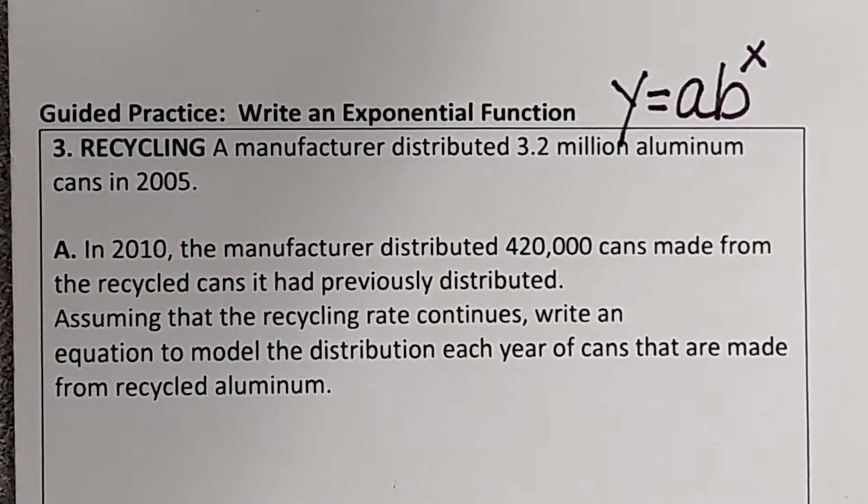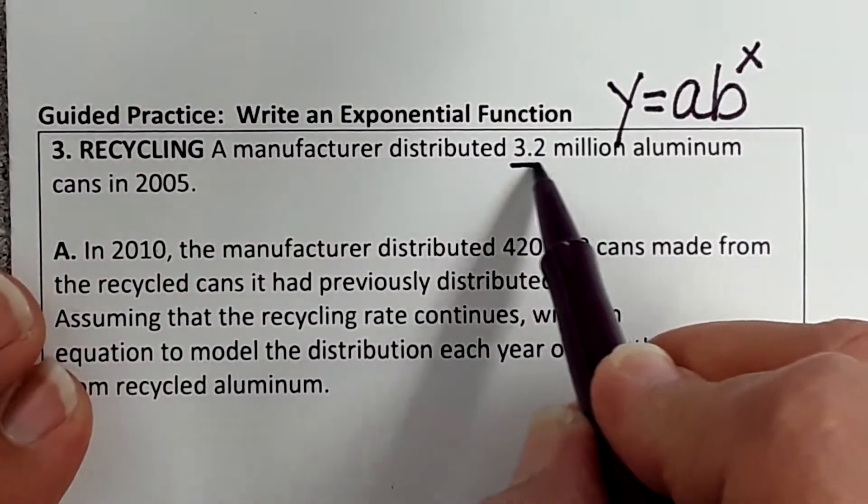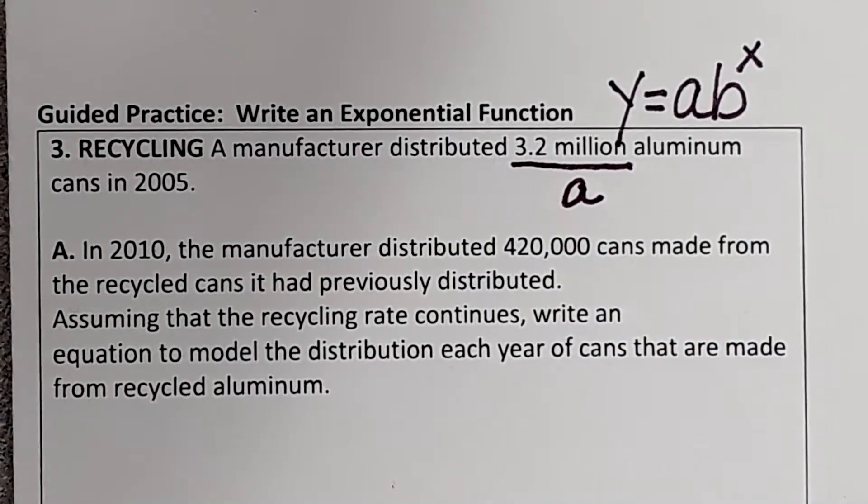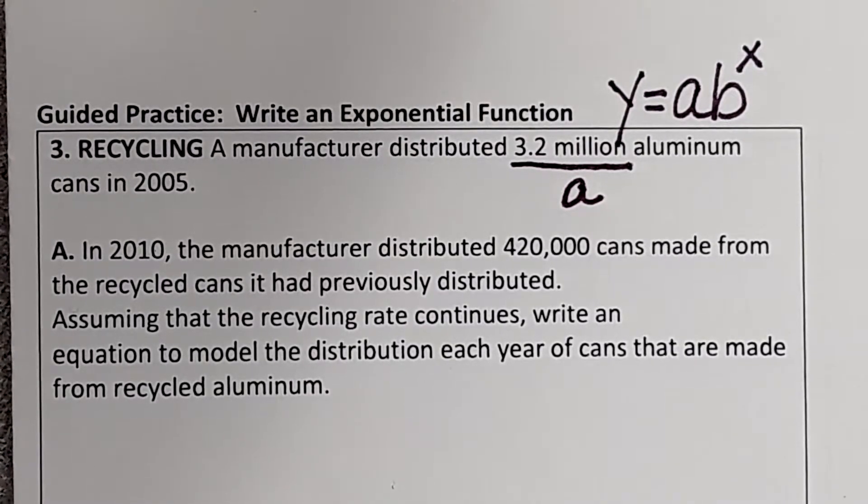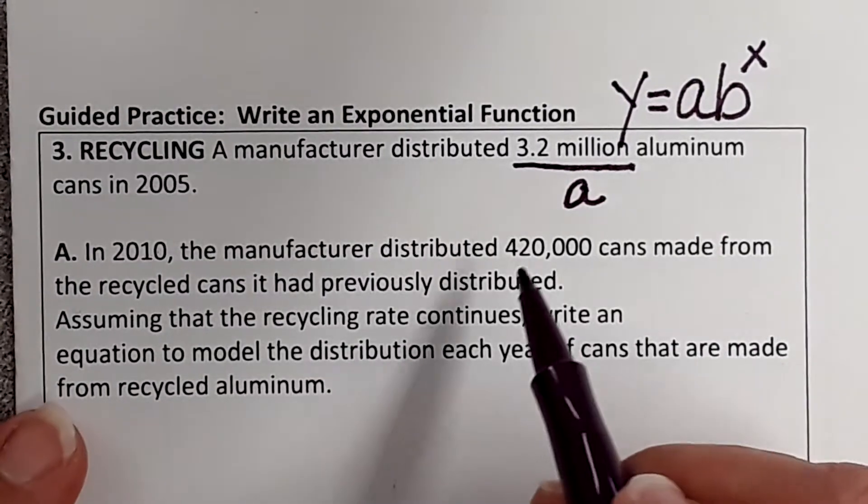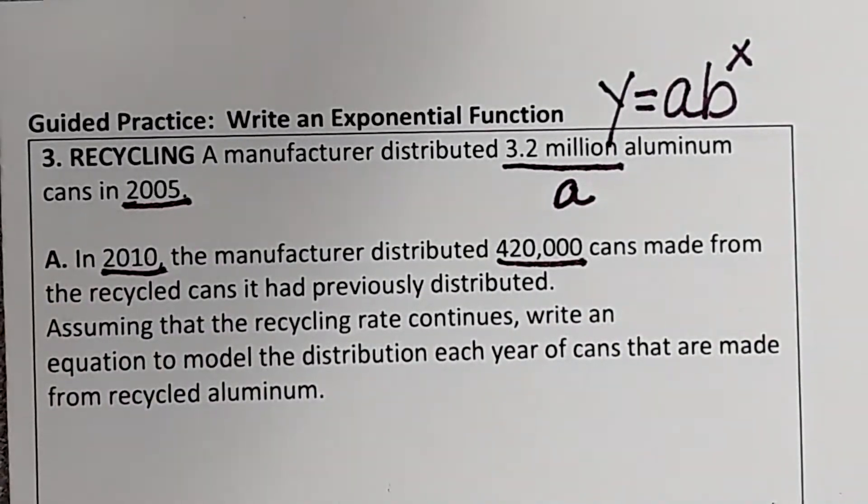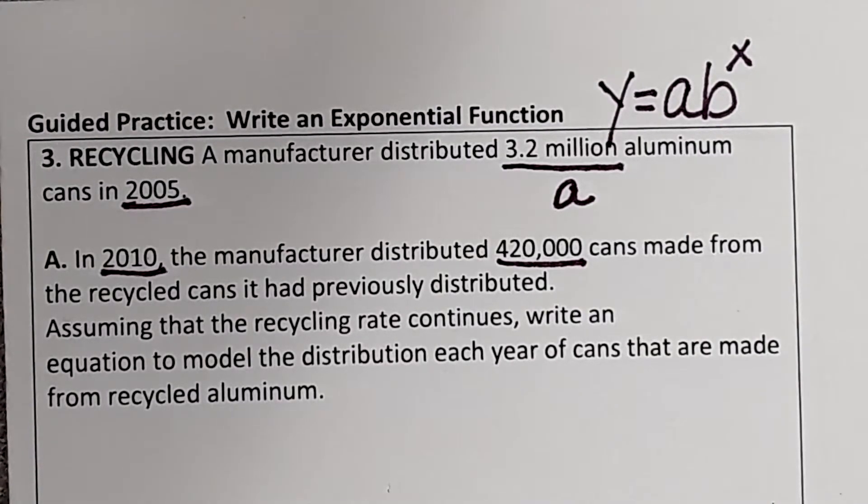In this equation, y is the amount that we have in the future, a is our initial amount, b is our rate, and x is our exponent. If we have years, it's the difference in years. We're going to read this problem. A manufacturer distributed 3.2 million aluminum cans in 2005, so 3.2 million is our A. That's what we're starting off with. In 2010, the manufacturer distributed 420,000 cans made from the recycled cans.